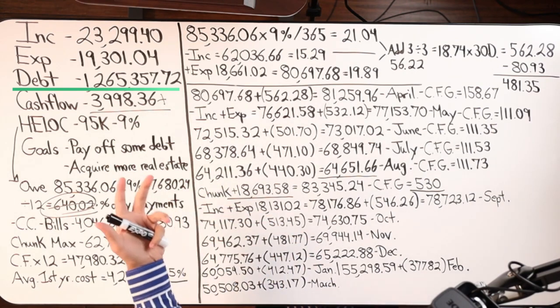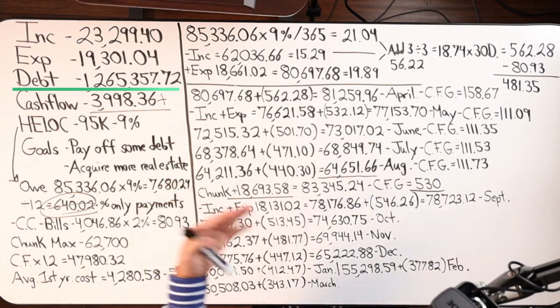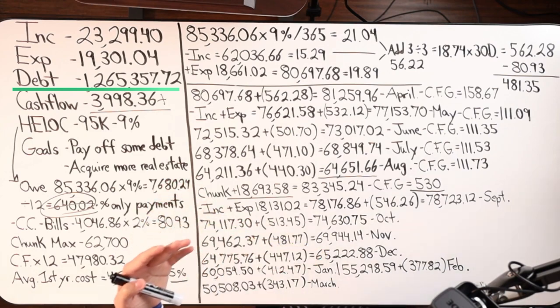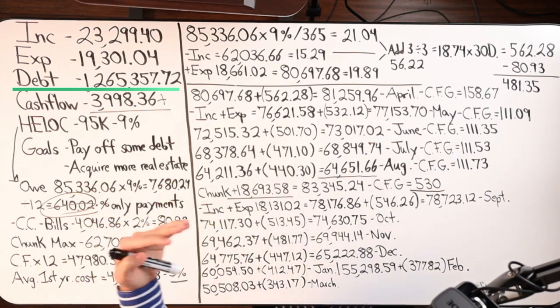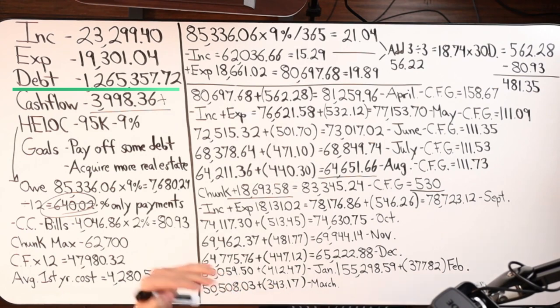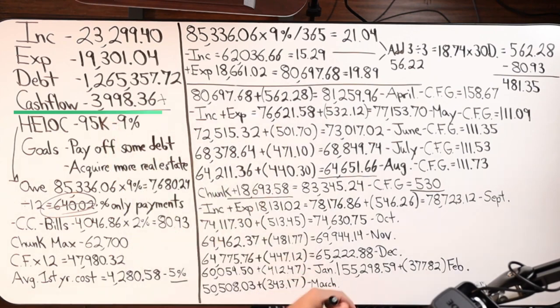A lot of this debt is mortgage debt. It's got a lot of properties, real estate investments. So his concern is more of eliminating some of the consumer debt that he has rather than the property. His net cashflow is $3,998.36.